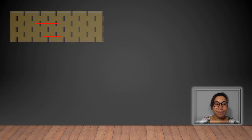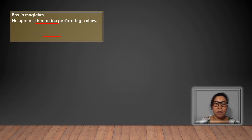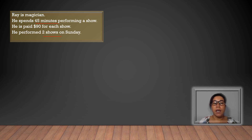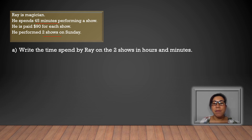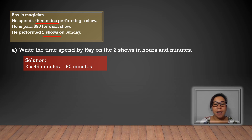In order to answer this problem, we need to analyze and read the problem again. Ray is a magician. He spends 45 minutes performing a show. He is paid $90 for each show. He performed 2 shows on Sunday. We are first asked to write the time spent on 2 shows in hours and minutes. To solve that, we multiply 2 by 45 minutes, and that is 90 minutes.